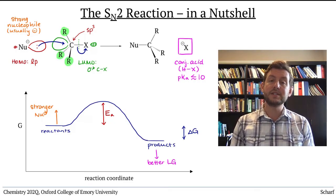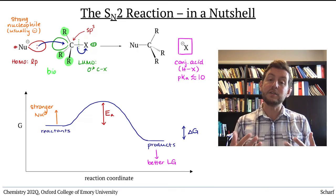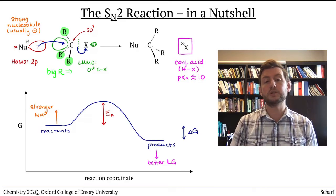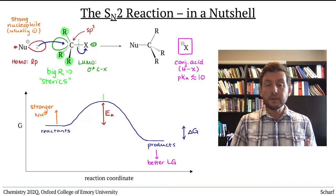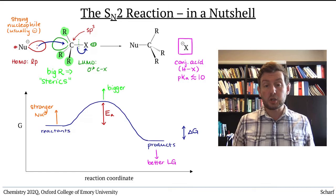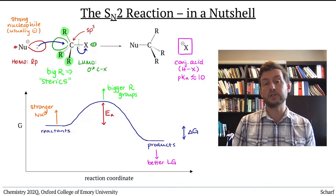This means that anything that gets in the way of these orbitals overlapping really hampers the reaction. We say that this reaction is sensitive to sterics, the size and bulk of the groups surrounding the reactive site. The bigger those groups are, the slower, more challenging, and less likely the SN2 reaction will occur.